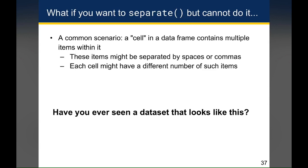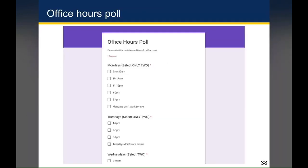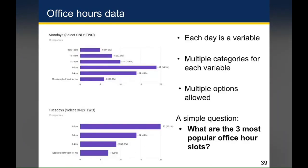Have you ever seen a data set that looks like this? Think back to earlier in the class when you were filling out the helpful office hours poll. You were selecting which office hour times work for you and there was a nice note written by Nick which basically said select only two times for each of the days. When you summarize the responses in Google Forms you get a series of bar charts, and each of the days is a variable with multiple categories for each variable that represent the different times and multiple options allowed.